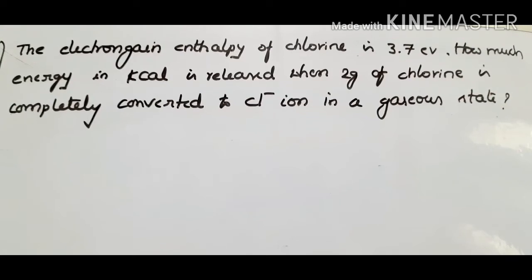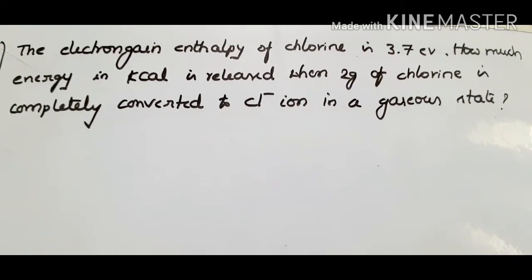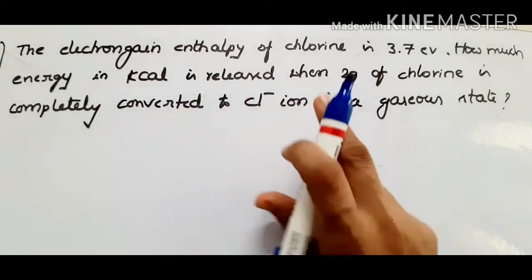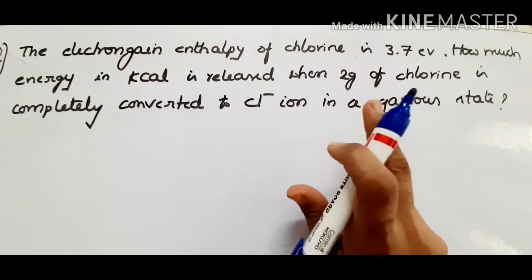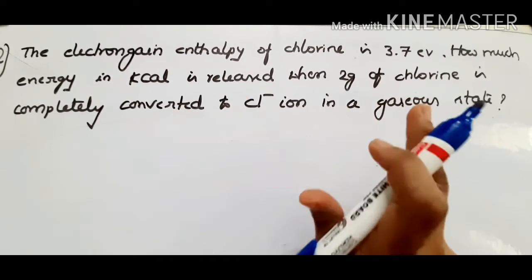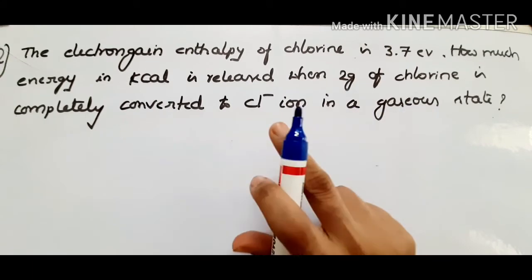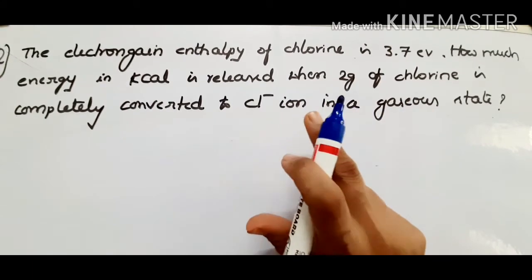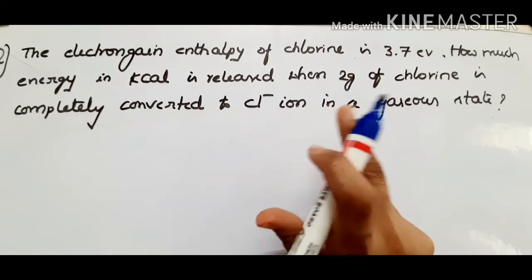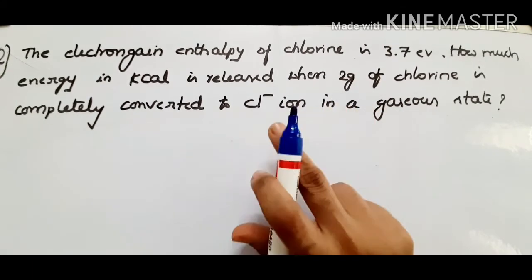Hi students, in this session we are going to solve some problems based on electron gain enthalpy and ionization enthalpy, which is a part of periodicity of class 11. The electron gain enthalpy of chlorine is 3.7 electron volts — how much energy in kilocalories is released when 2 grams of chlorine is completely converted into Cl⁻ ion?